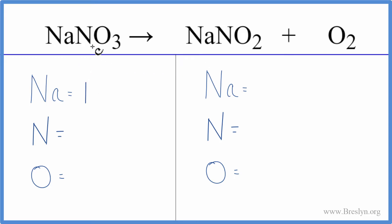We have one sodium, one nitrogen, and three oxygens. On the product side we have one sodium, one nitrogen, and two oxygens, plus we have these two oxygens here with the O2, so we have four.